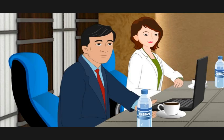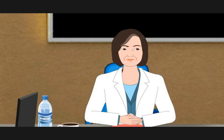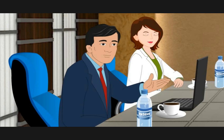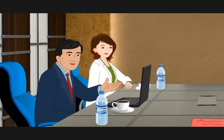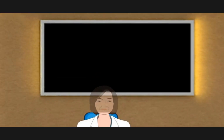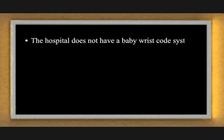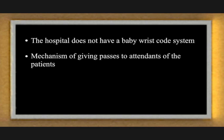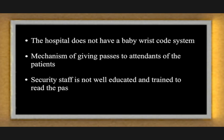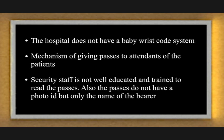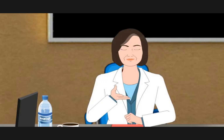A team performed Process FMEA immediately in the hospital and identified certain process faults, such as: the hospital does not have a baby wrist code system, there is no proper mechanism for giving passes to attendants of patients, security staff is not well educated and trained to read the passes, and passes do not have a photo ID — only the name of the bearer.